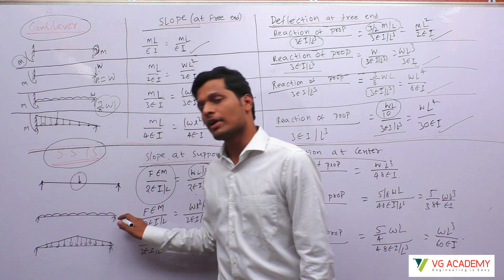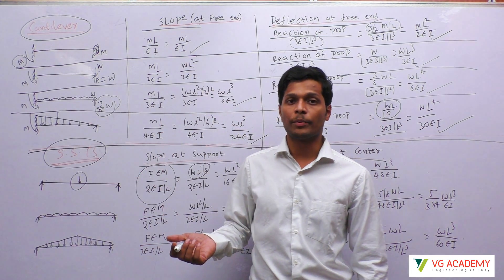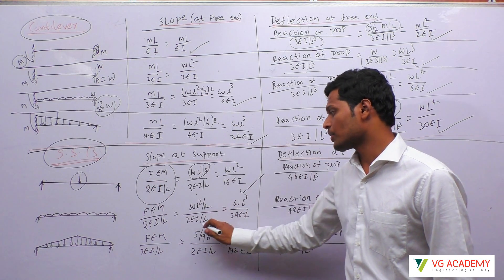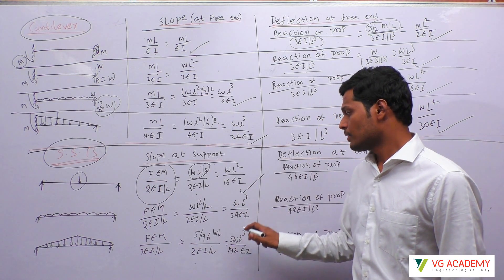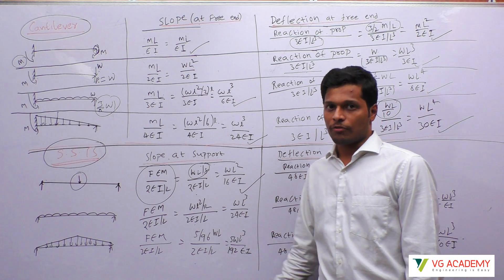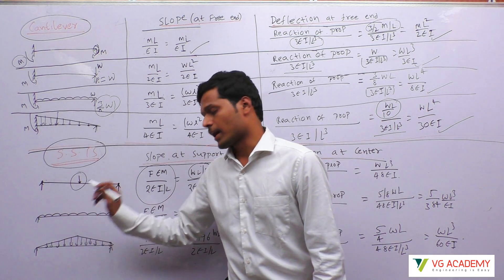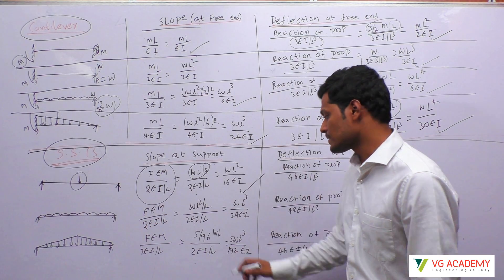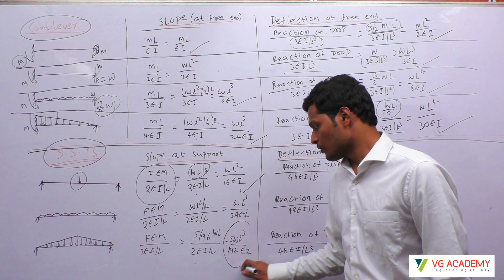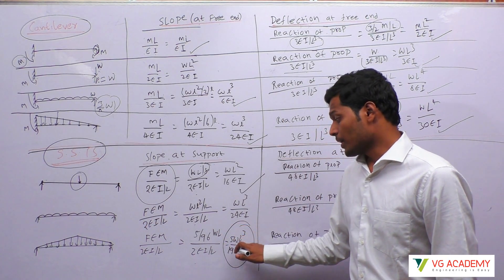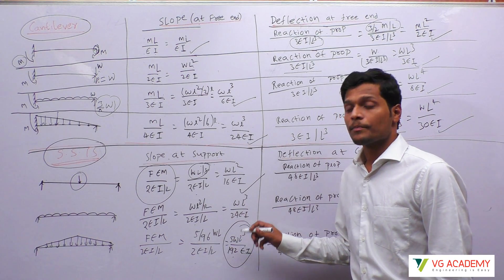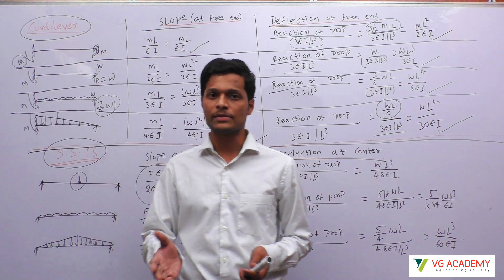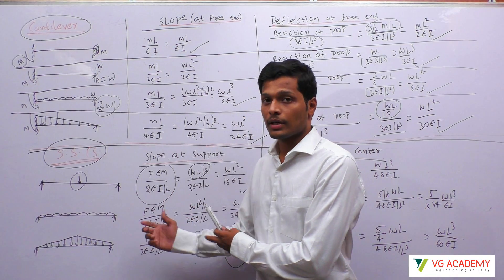For a center point load, the fixed end moment is WL by 8. Substituting WL by 8 and dividing by 2EI by L gives WL squared by 16EI. For a UDL, the fixed end moment is WL squared by 12. Substituting gives WL cubed by 24EI. For a triangular load, the fixed end moment is 5 by 96 WL squared, giving 5 by 192 WL cubed by EI. So if you remember fixed end moments, you can get the slope.